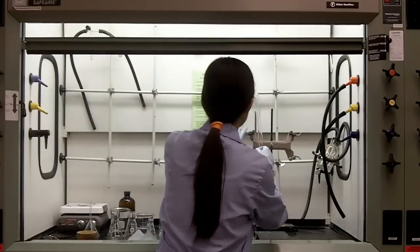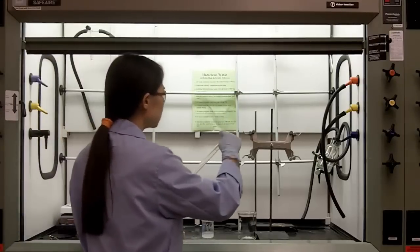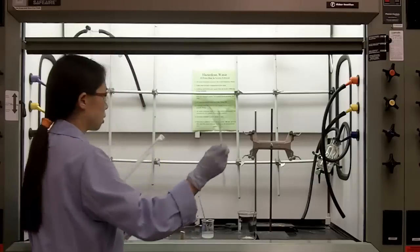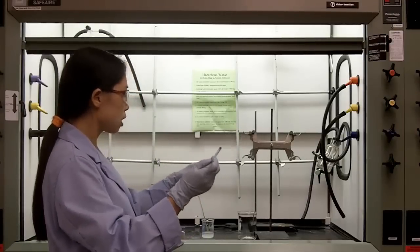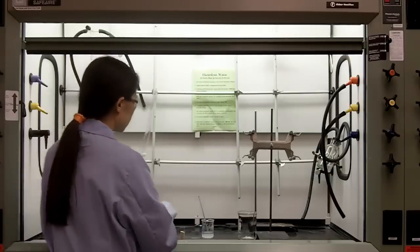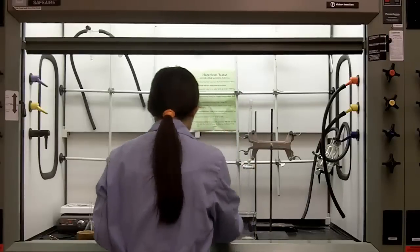After that, you need to have your column ready. So get a clean, dry column. Pack with a small piece of cotton. Use a glass rod, push the cotton to the bottom. And then, put a thin layer of sand on top of the cotton.